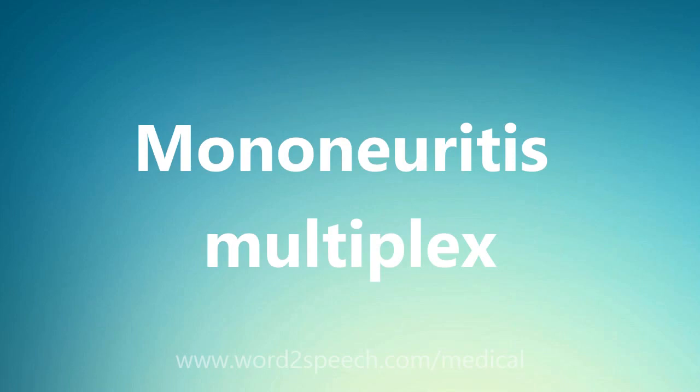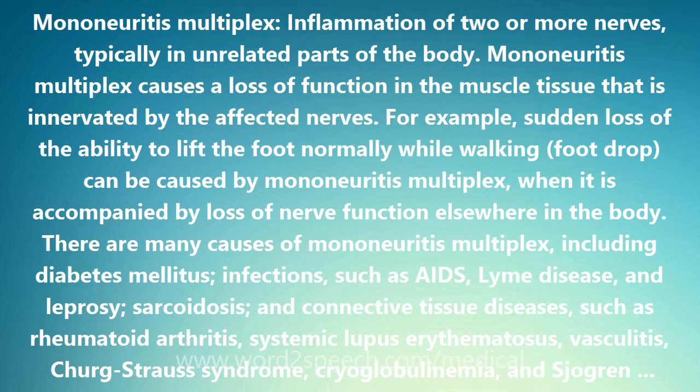Mononeuritis multiplex is the inflammation of two or more nerves, typically in unrelated parts of the body. Mononeuritis multiplex causes a loss of function in the muscle tissue that is innervated by the affected nerves.